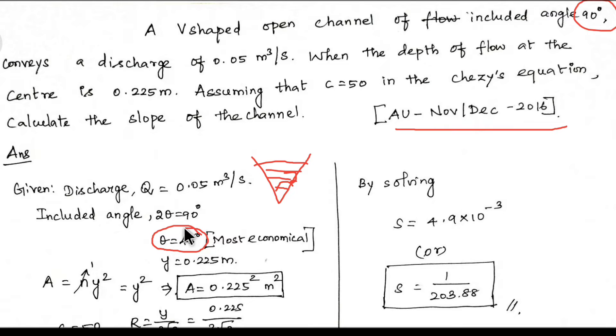We are derived from most economical triangular section where theta equal to 45 degrees. We will find out the most economical section.